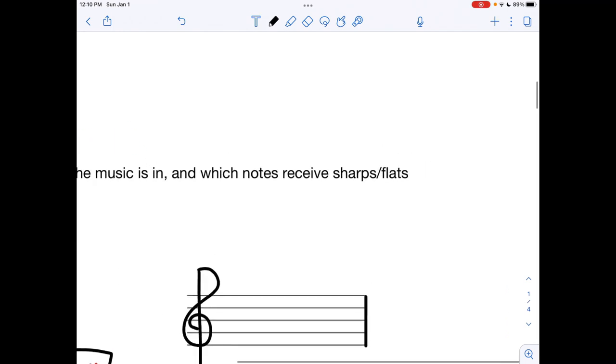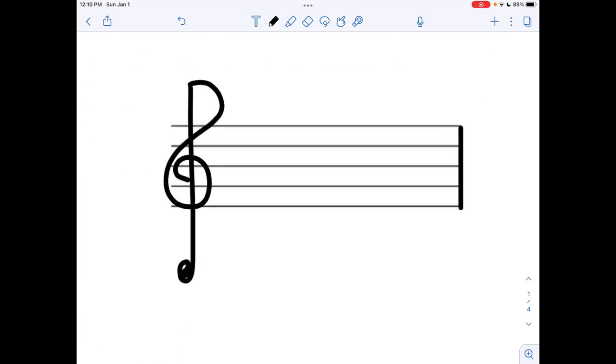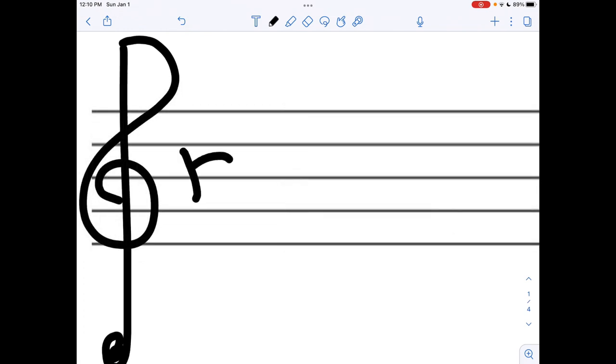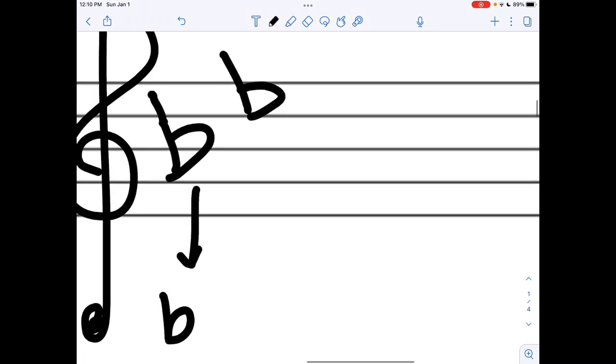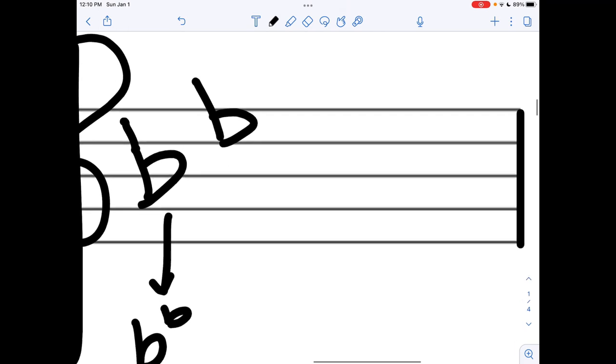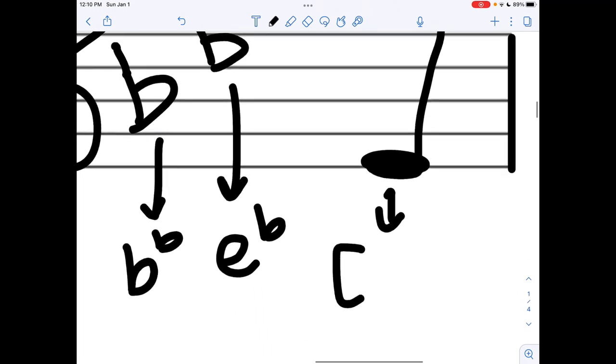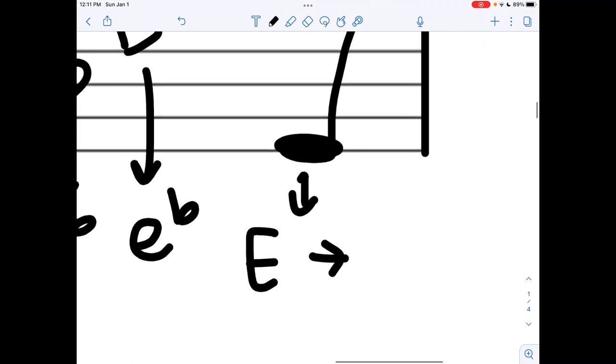The key signature tells you which notes receive sharps or flats, so that's what this video will cover. For example, let's say I have this in the key signature. This is a B flat and this is an E flat, which means that whenever I have an E written, I'm actually going to play or sing an E flat, not an E.